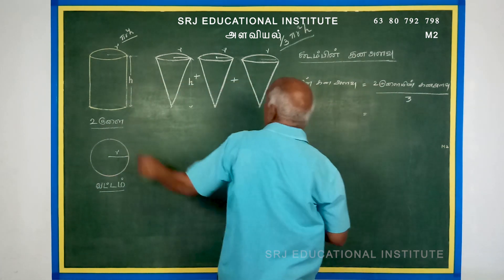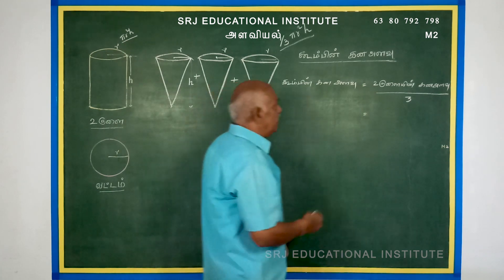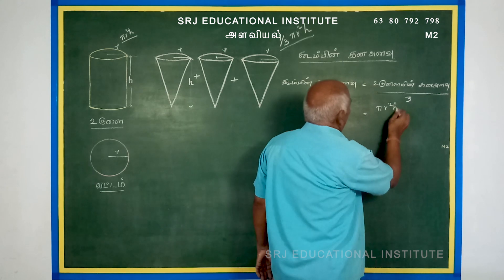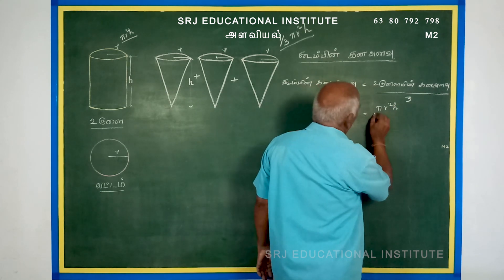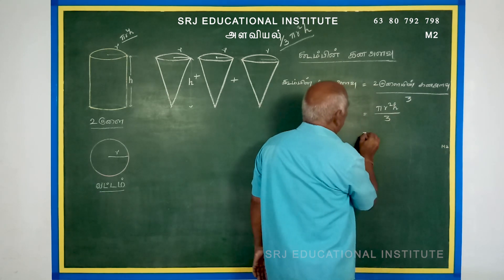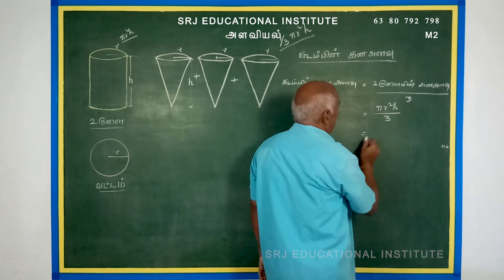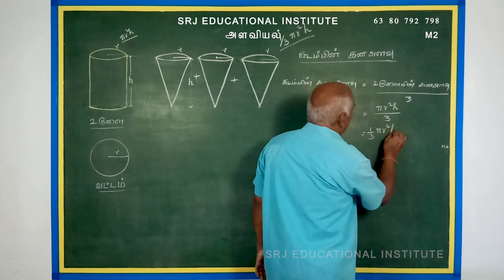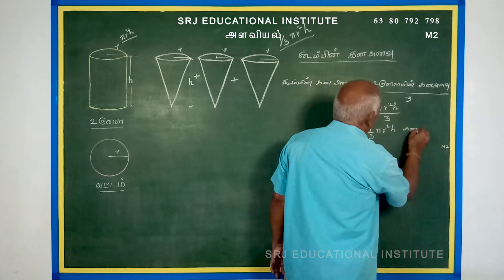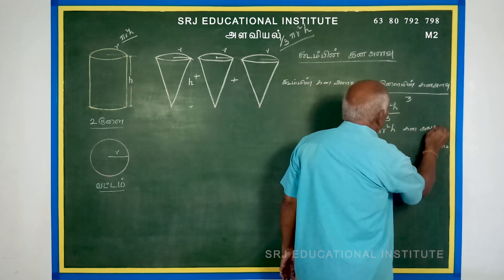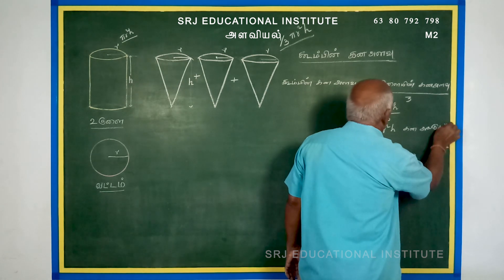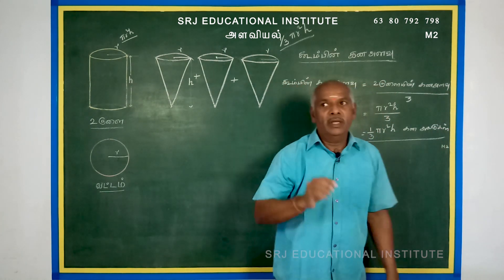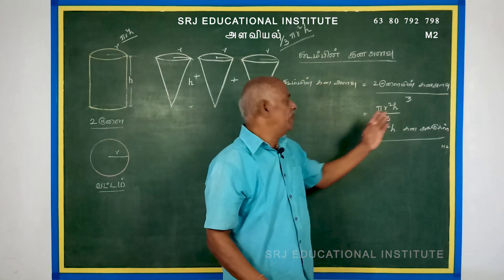The formula is pi r squared h. Pi r squared h by 3. This is what we call 1 by 3. So, 1 third pi r squared h. That's what we call the formula: pi r squared h.